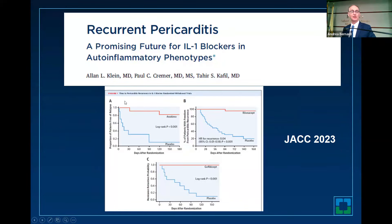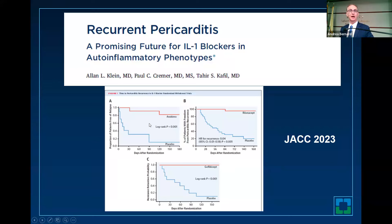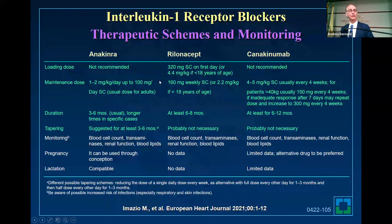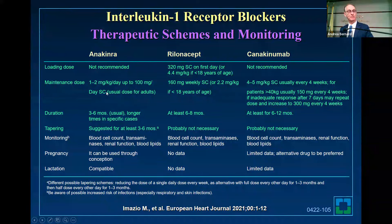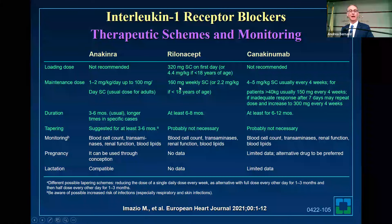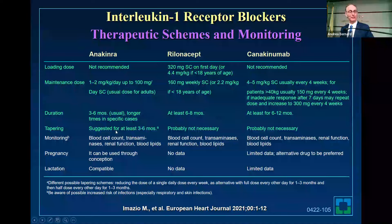Rilonacept is FDA approved, anakinra is off-label, and the Russian drug is Russian — not sure where that's going to fit. There are newer agents being developed that block the IL-1 cascade. The differences between anakinra and rilonacept: there's no loading dose with anakinra — it's given at 100 mg subcutaneous daily. Rilonacept has a loading dose and is given weekly. In general, the duration is at least a year or longer. We taper anakinra. We're not sure how to stop rilonacept — whether to taper or stop cold turkey. The half-life for rilonacept is about a week, while anakinra's half-life is hours.